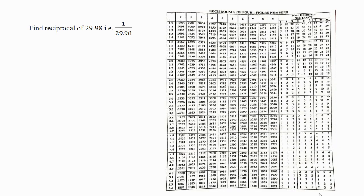For that, let's take one example. Find the reciprocal of 29.98, which I express as 1 divided by 29.98. As you can see, the given number is a two-digit number. So for use of the reciprocal table I have to convert the given number into a one-digit number by expressing it in the power of 10. So I write the number as 1 divided by 2.998 into 10 raised to 1. When I multiply 2.998 by 10 raised to 1, I get the original number 29.98. The conversion of the number in this form is known as standard form.